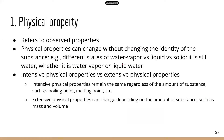Now let's look at physical properties. Physical properties really refer to something that you can observe. Physical properties can change without changing the identity of a substance. For example, if you look at water — water can be water vapor, or the common liquid water, or water can be in ice form, solid form. Those are all different physical properties. They can change, but no matter what, this substance is still water. The identity of the substance does not change, even though the physical characteristics change.